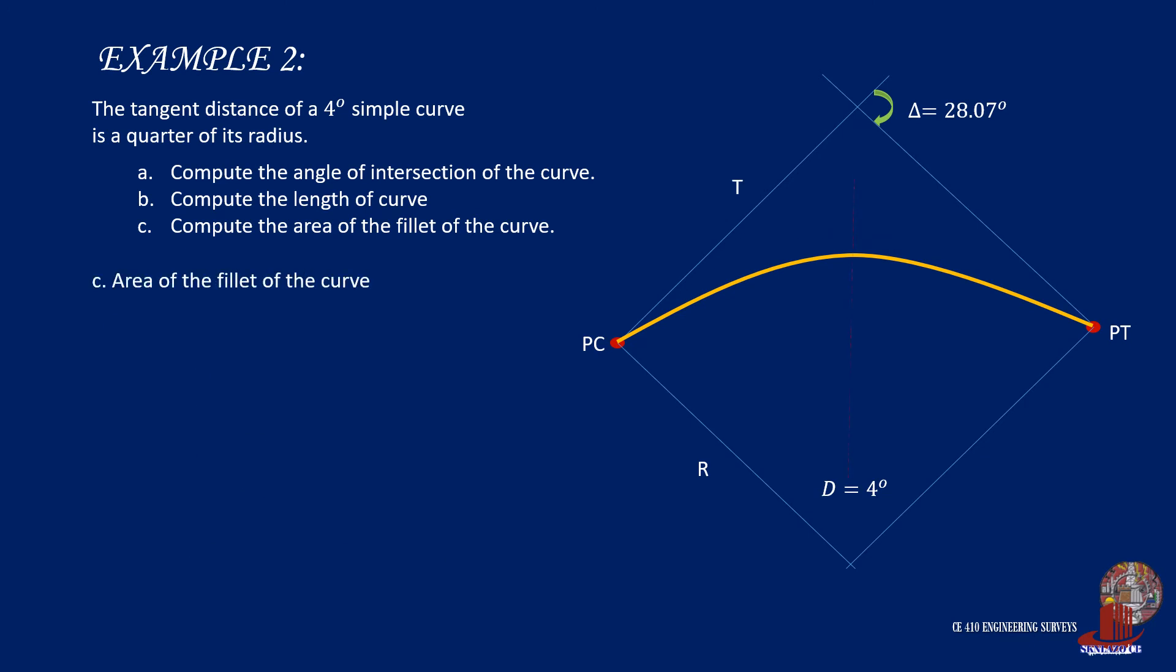The last requirement is the area of the fillet of the curve, the area on top of the curve within the boundaries of the tangent lines. If we are to use the elements, we can see that the whole polygon is made up of two right triangles with a base T and height r, then we deduct the sector. Again, from ratio and proportion,